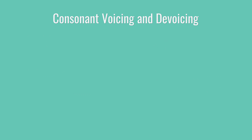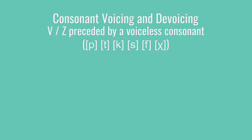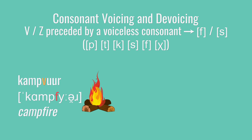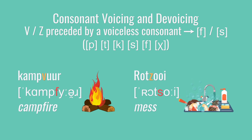Our last place where we're going to deal with voicing is kind of the reverse situation. This time, you have a voiceless consonant like a p, t, or k, or an s, or an f, or a ch sound, and then the next sound is a v or a z. In those cases, the v or the z is going to devoice and turn into an f sound or an s sound. That gives you words like kampvuur and rotzooi. It's not kampvuur, it's kampvuur, with a clear f in the middle. And it's not rotzooi, but rotzooi, with a clear s sound in the middle. Basically, the v's and z's are matching the voiceless consonants that came right before them.